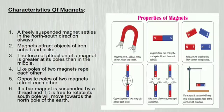Let's know the characteristics of a magnet. A freely suspended magnet settles in the north-south direction always. Magnets attract objects of iron, cobalt and nickel. The force of attraction of a magnet is greater at its poles than in the middle.